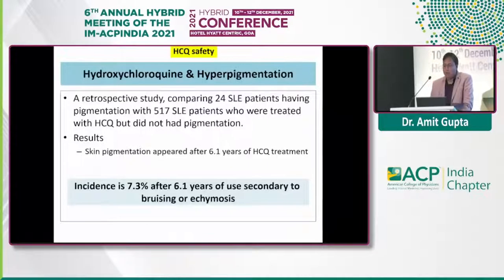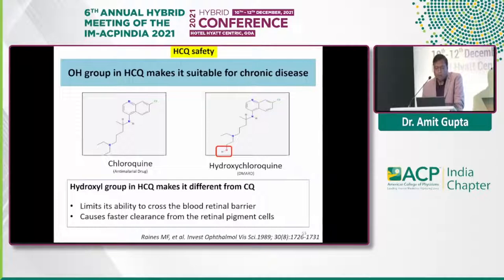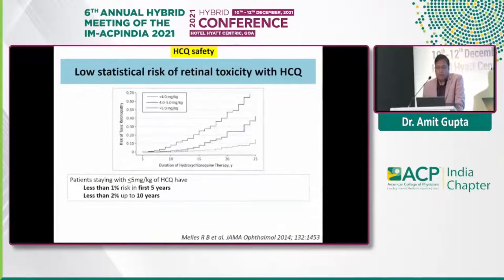From a rheumatologist's perspective on HCQ safety: hyperpigmentation is a side effect with an incidence of 7.3 percent after cumulative use of 6.1 years. The hydroxyl group in HCQ makes it suitable for chronic disease use, limits its ability to cross the blood-retinal barrier, and causes faster clearance from retinal pigment cells. The statistical risk of retinal toxicity with HCQ is low — less than 1 percent in the first 5 years and less than 2 percent up to 10 years.